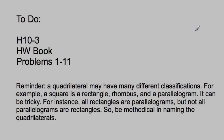Here's our task for today: it's from the homework book, H10-3. We're going to do all the problems, 1 through 11. A big reminder: a quadrilateral may have many different classifications. For example, a square is a rectangle, a rhombus, and a parallelogram. It can be tricky — all rectangles are parallelograms, but not all parallelograms are rectangles. So being methodical and naming your quadrilaterals is very, very important. Good luck.